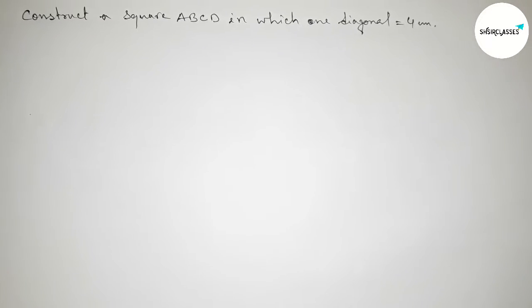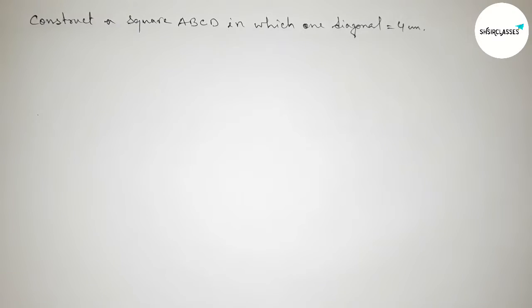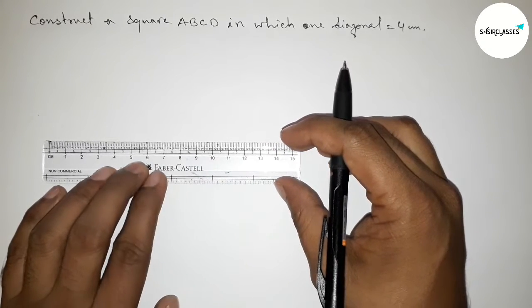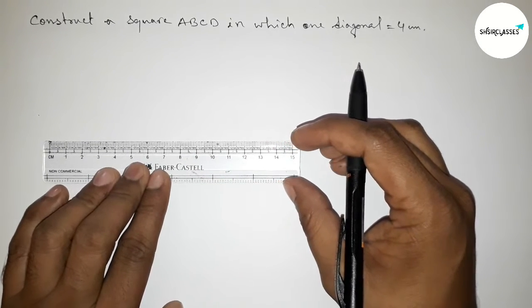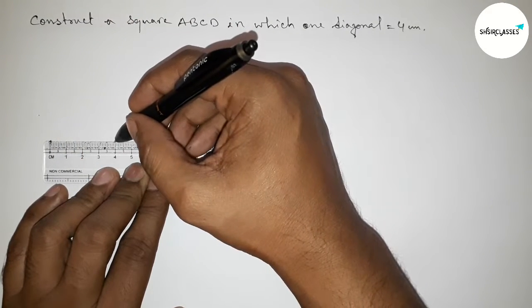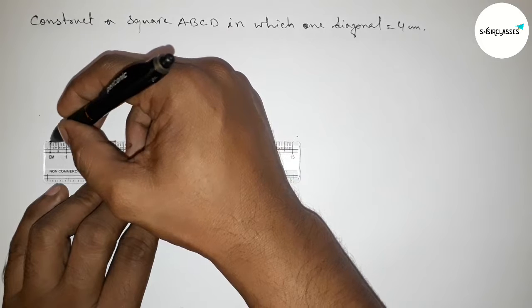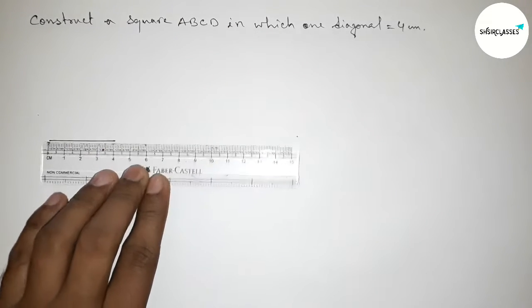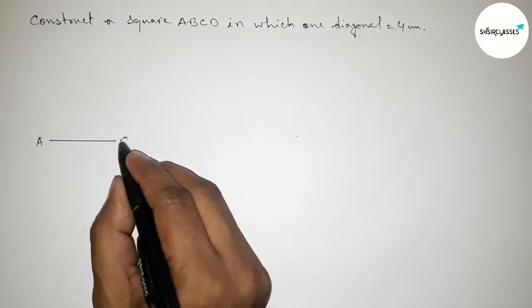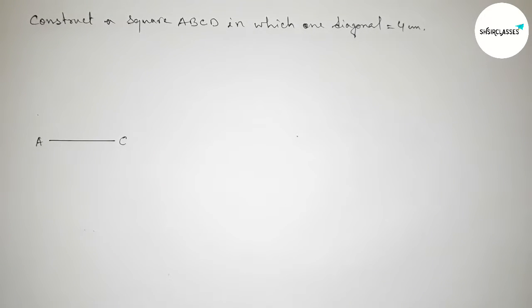First of all, with the help of a scale, I am going to draw here a length of four centimeter. So this is a four centimeter line segment. Now taking here point A and here C.